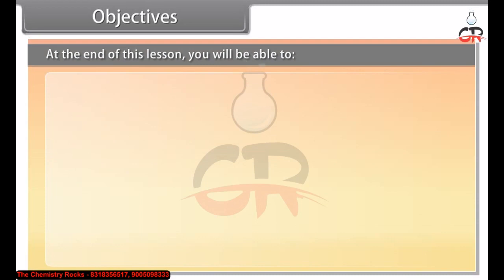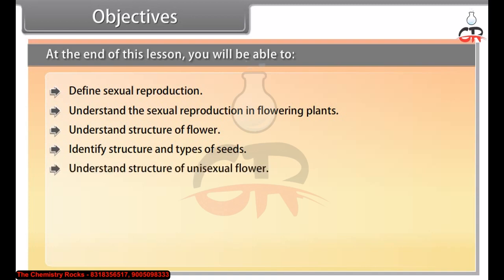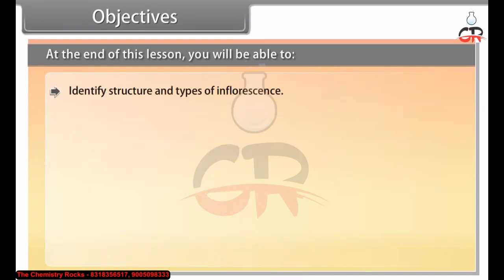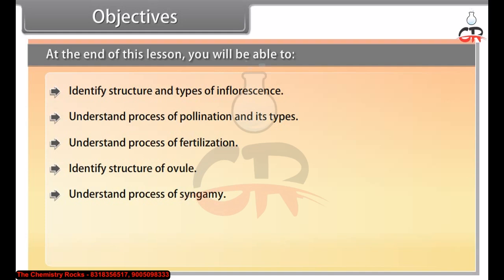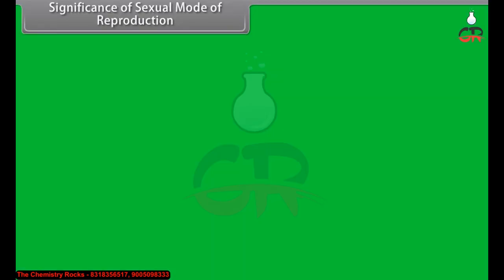At the end of this lesson, you'll be able to: define sexual reproduction; understand sexual reproduction in flowering plants; understand structure of flower; identify structure and types of seeds; understand structure of unisexual flower; identify structure of bisexual flower; understand structure of neuter flower; identify monoecious and dioecious plants; understand functions of flower; identify structure and types of inflorescence; understand process of pollination and its types; understand process of fertilization; identify structure of ovule; understand process of syngamy, triple fusion, and double fertilization; and the significance of sexual mode of reproduction.